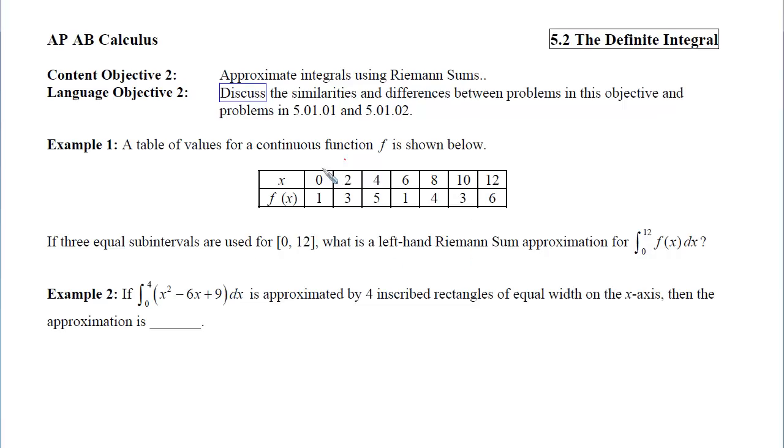So we want three equal subintervals. That means our delta x will be 12 minus 0 over 3, which is 4. So I'm going to have widths that are 4, which means I'll be using the left-hand x in each subinterval and the y values that go with those x's. So the left-hand Riemann sum approximation will be delta x times f of 0 plus f of 4 plus f of 8. Add that all up, and we get 40.